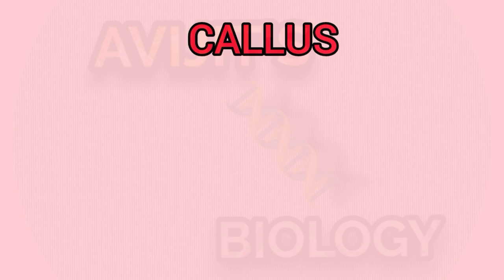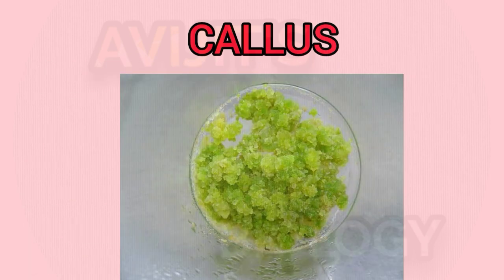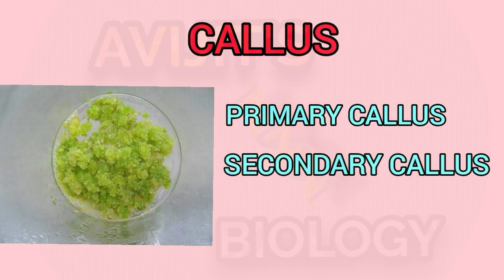Now, what is callus? When explants are cultured on the appropriate medium — usually with both an auxin and cytokinin — they can give rise to an unorganized, growing and dividing mass of cells, which is termed as callus. It is thought that any plant tissue can be used as an explant if the correct conditions are found. Callus can be of two types: the callus formed on an original explant is called primary callus, and a callus initiated from a piece of tissue dissected from primary callus is known as secondary callus.